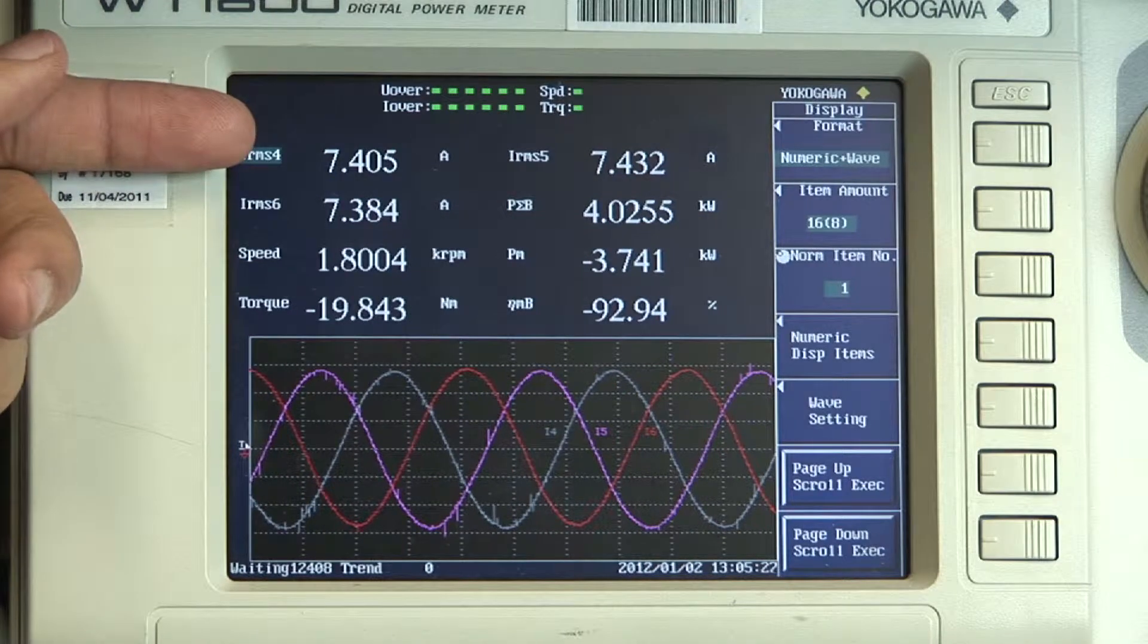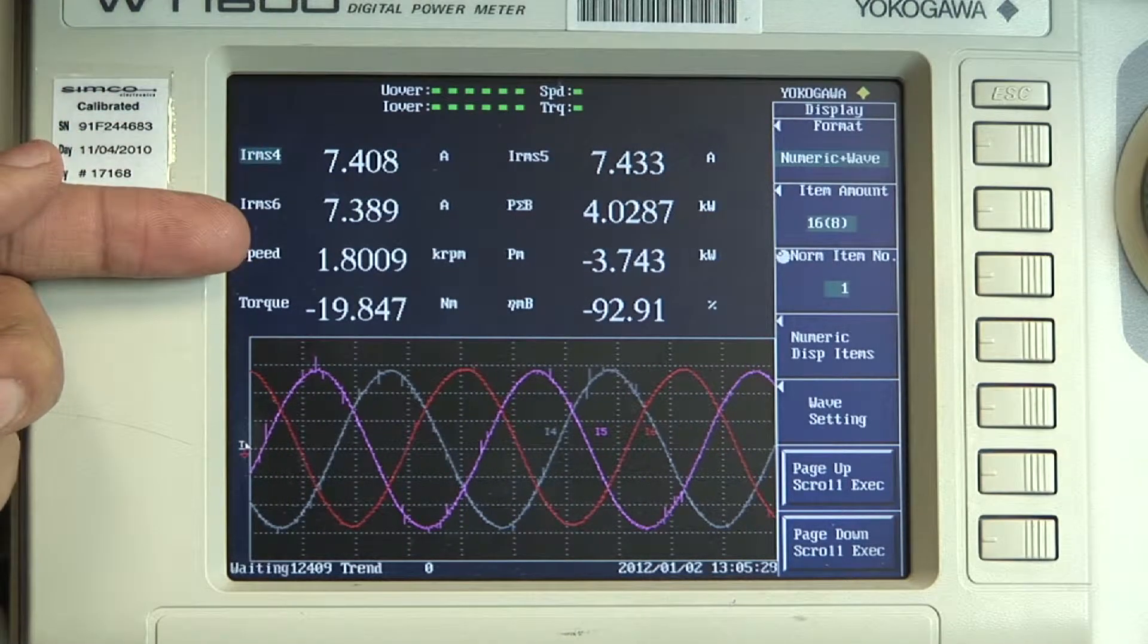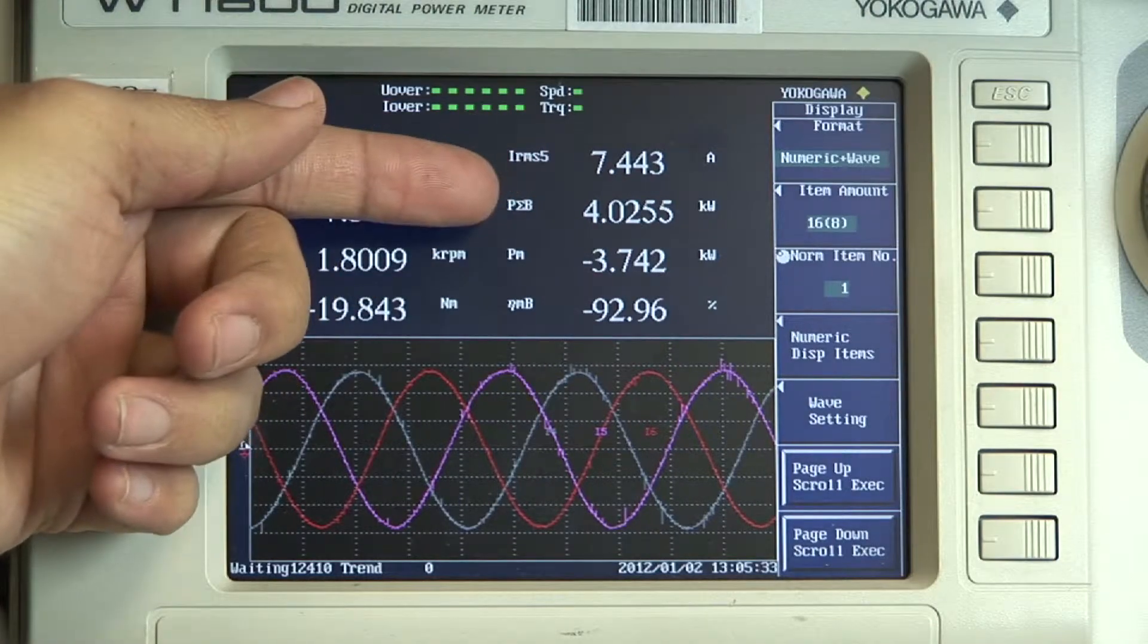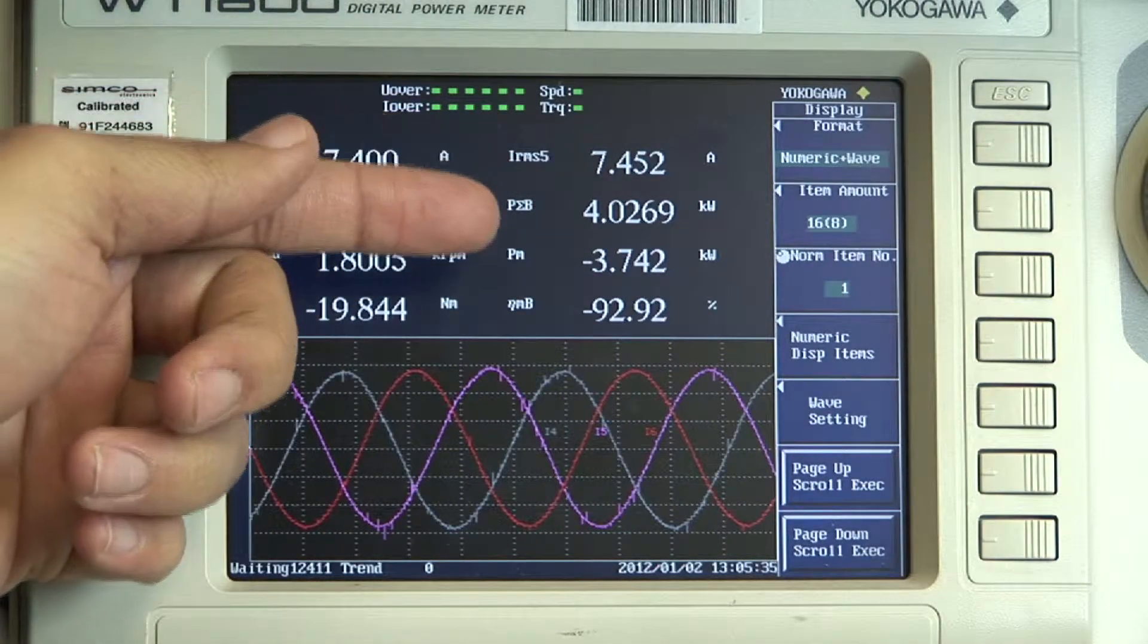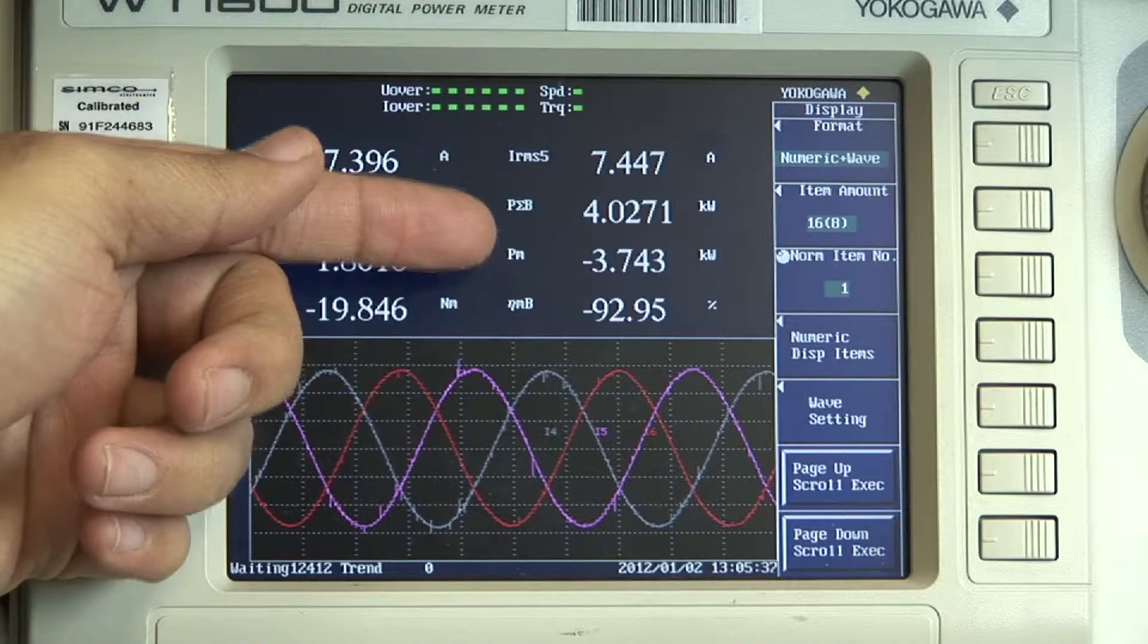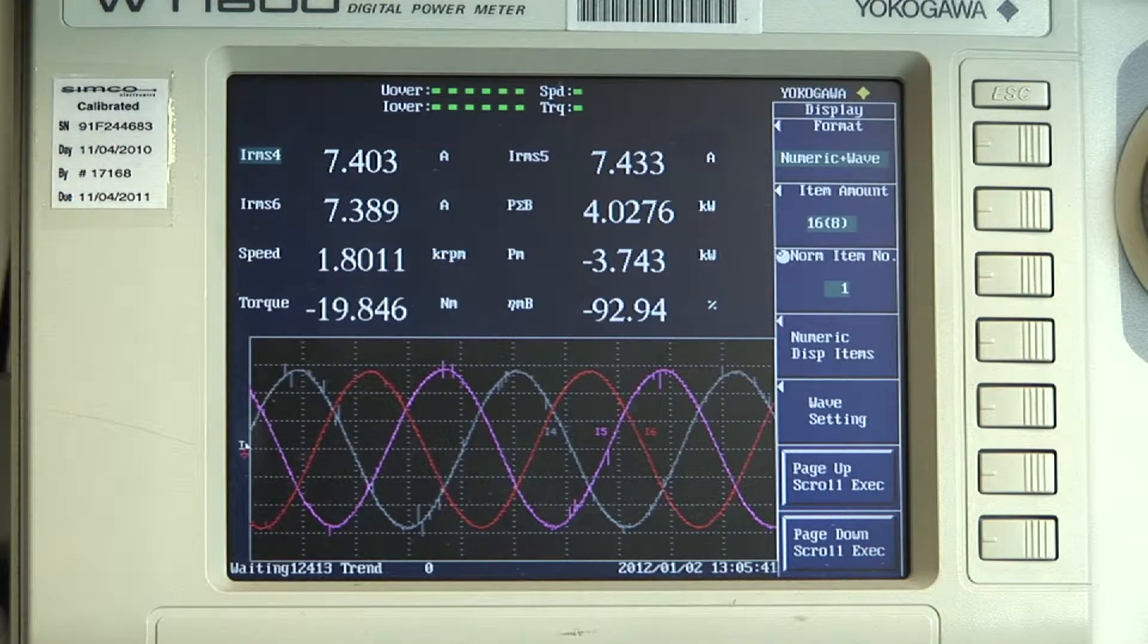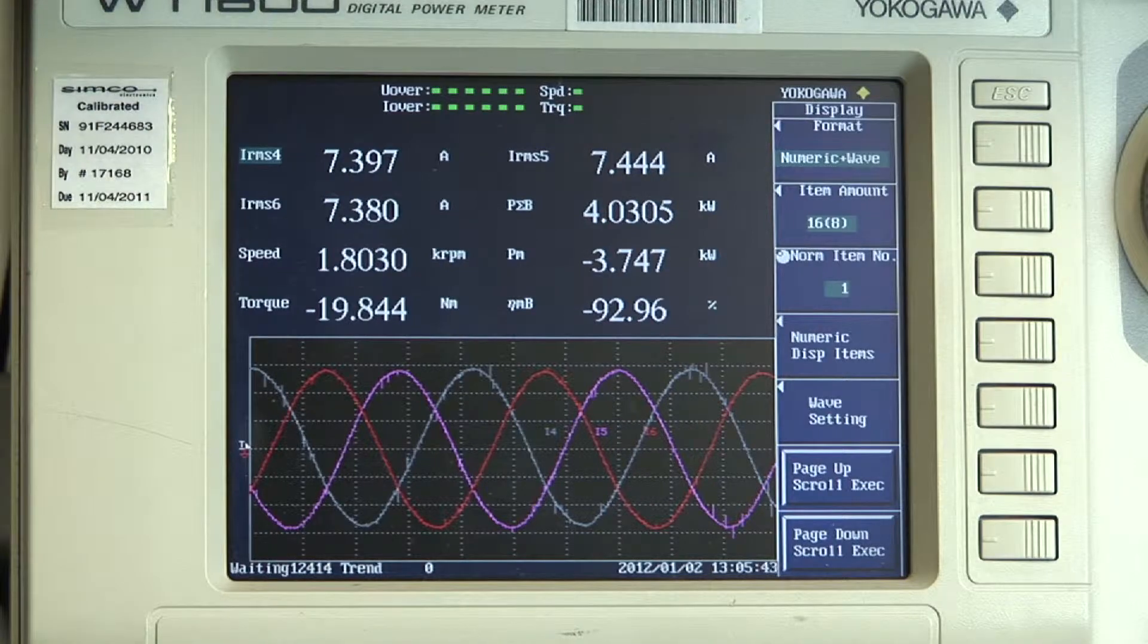On the power meter screen, we can see the values for motor current, motor speed, torque, motor input power, motor output power, and hence the resulting motor efficiency. We will now change the values for speed and torque to view the premium plus motor's performance over the operating range.